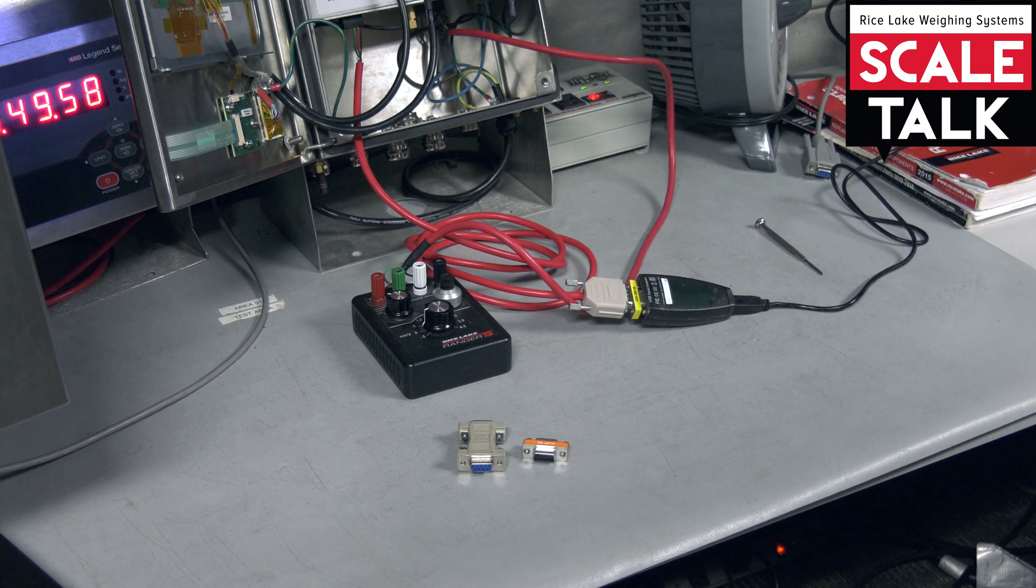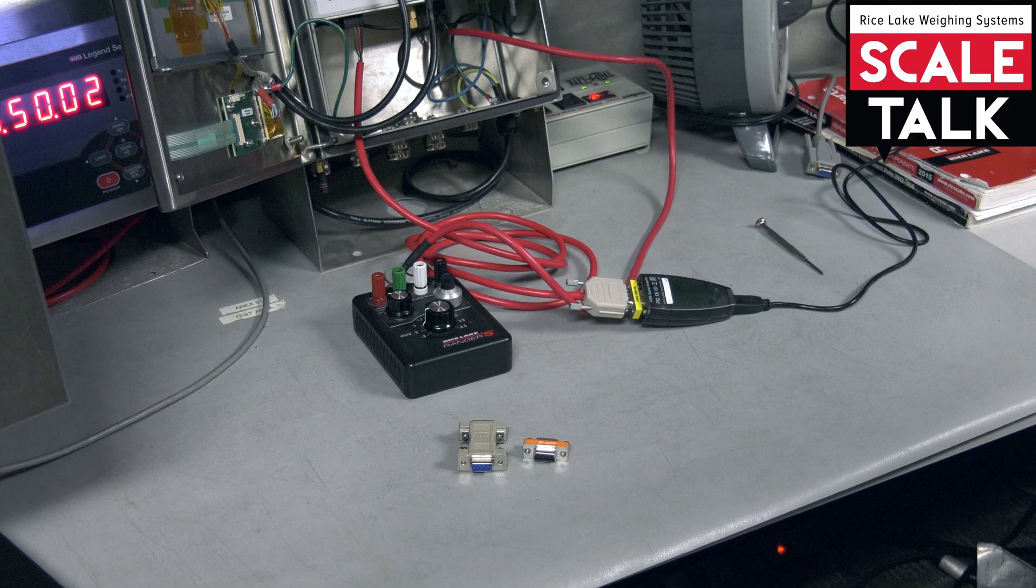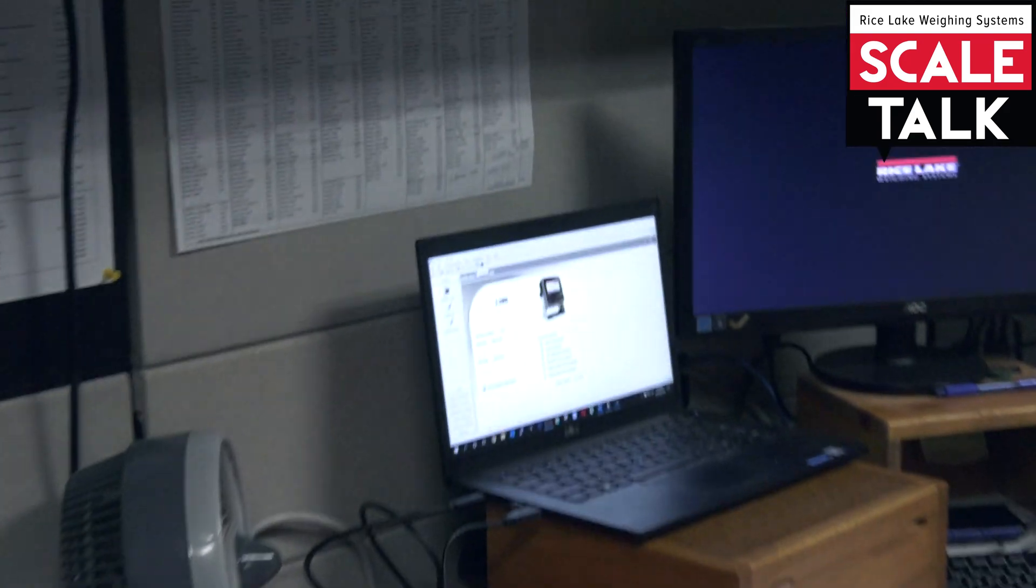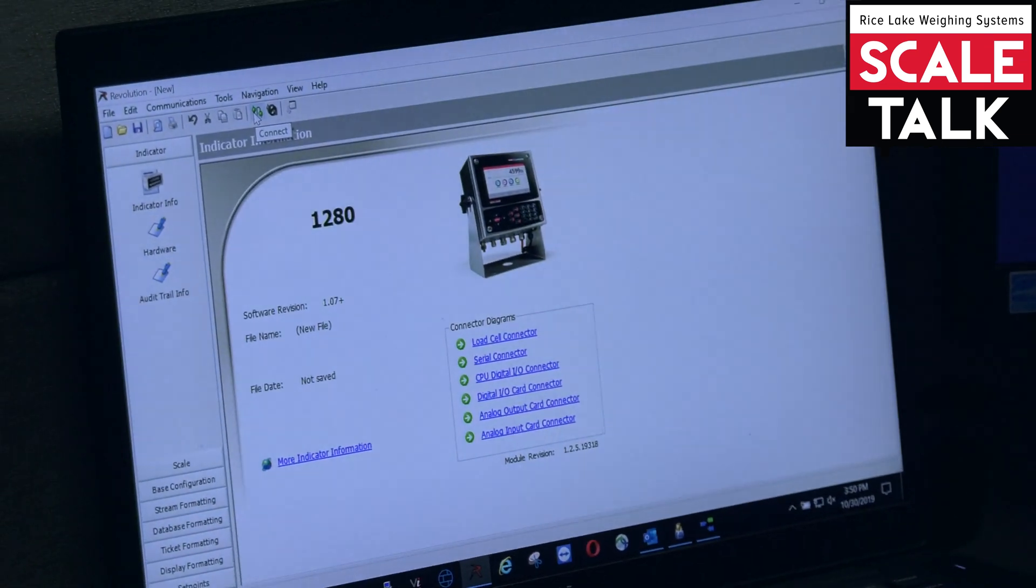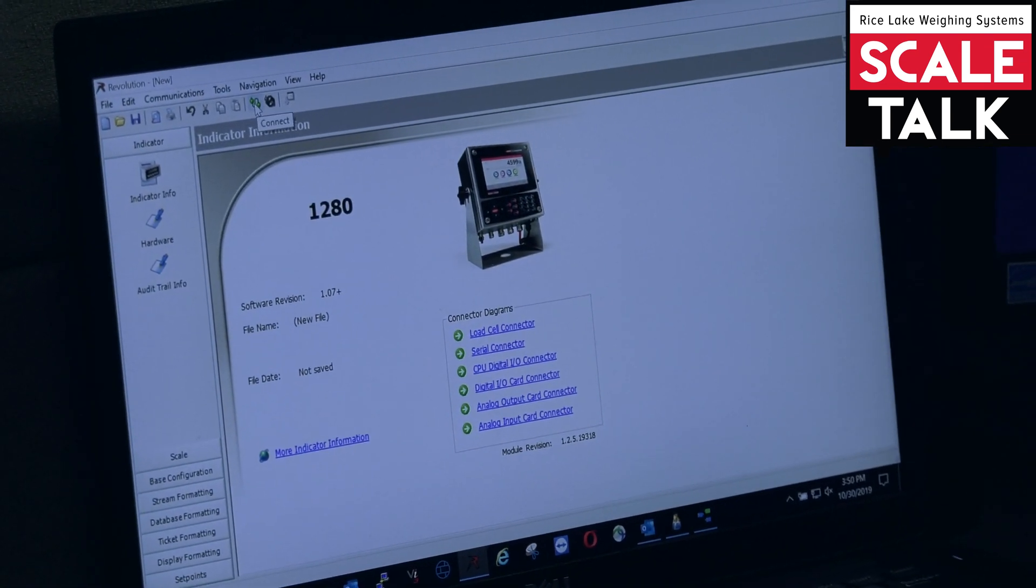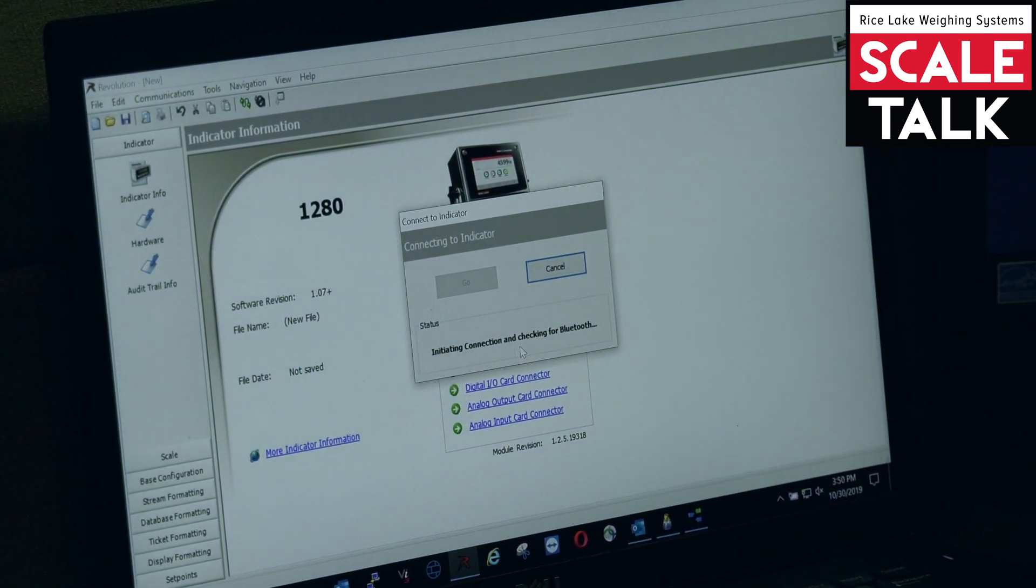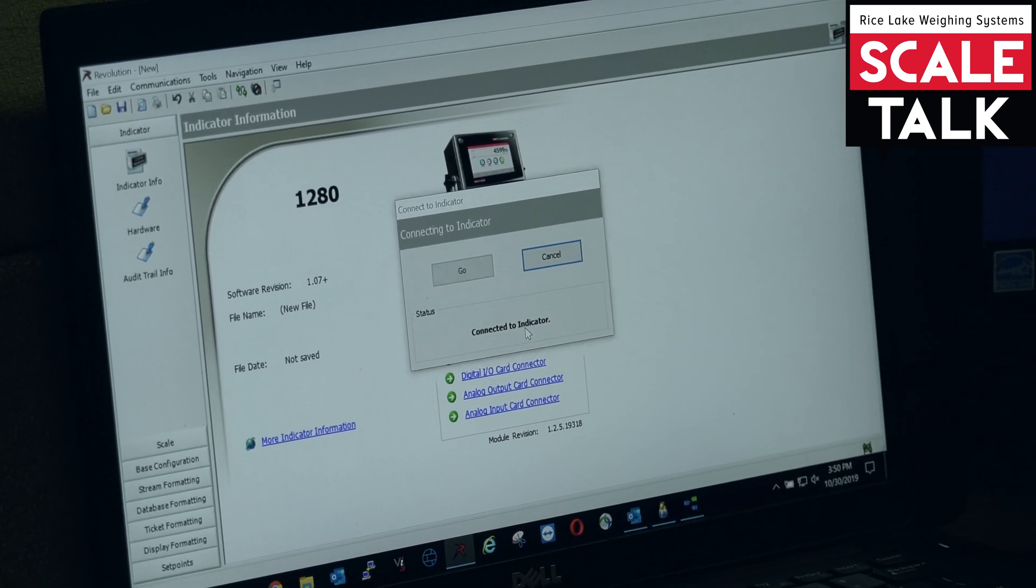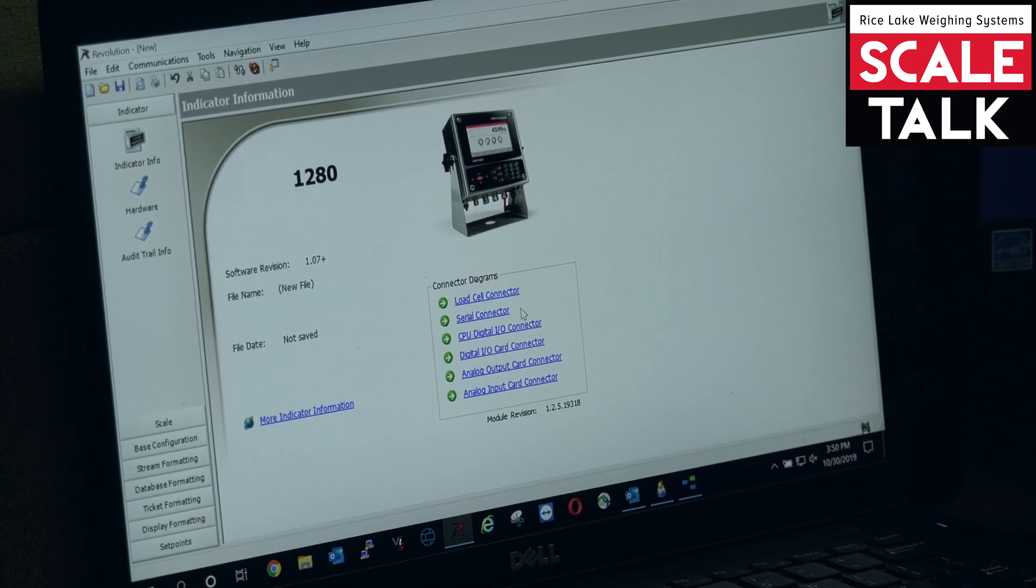Once we connect that, it is sometimes beneficial. We can use Revolution, ProCom, Putty. I've just used Revolution. I'm going to turn that a little bit. And if I connect, you're going to see it's initiating connection and checking from Bluetooth. And then we're connected to the indicator. That's pretty easy.